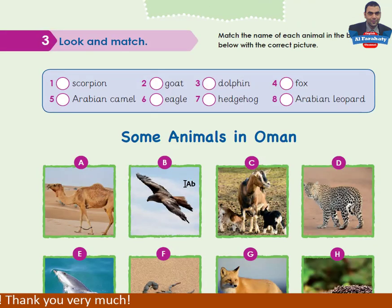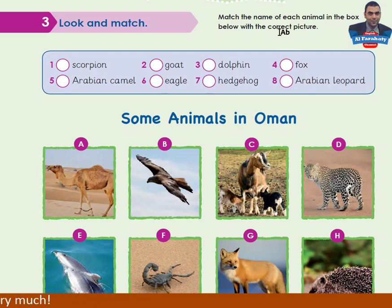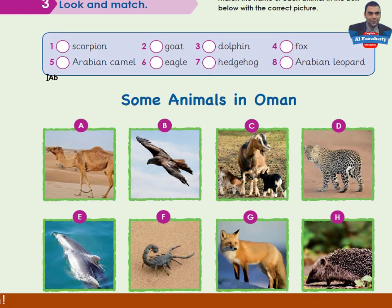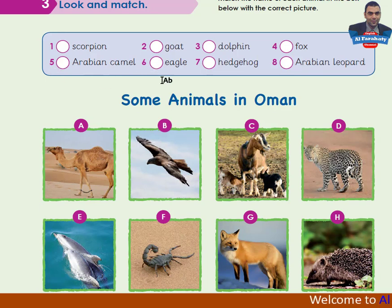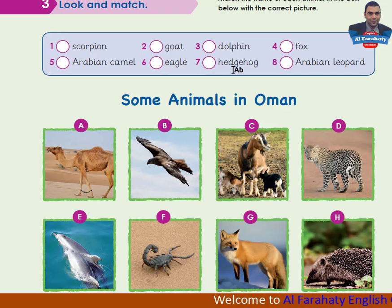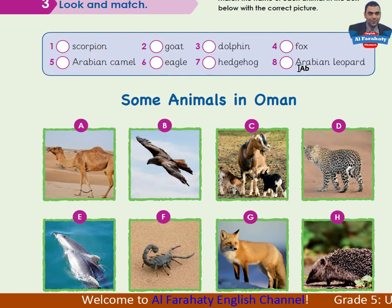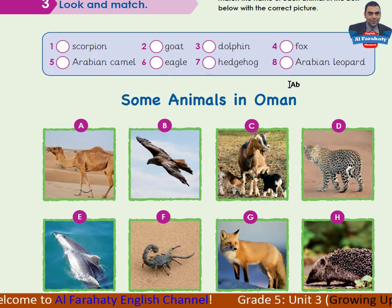Activity 3 — look and match. Match the name of each animal in the box below with the correct picture: 1. Scorpion, 2. Goat, 3. Dolphin, 4. Fox, 5. Arabian Camel, 6. Eagle, 7. Hedgehog, 8. Arabian Leopard. Take your time to do the activity, then come back to check your answers.